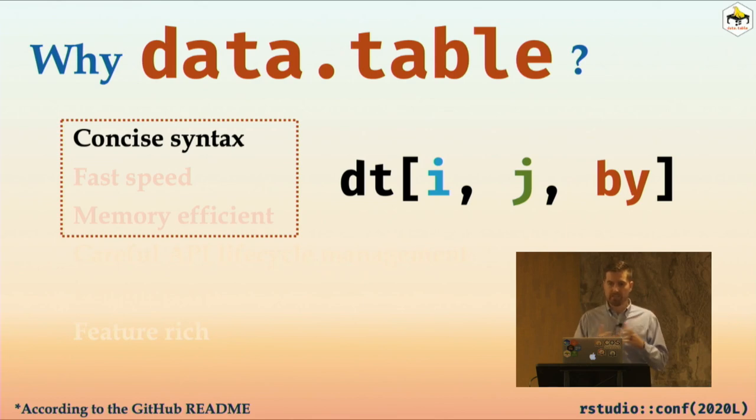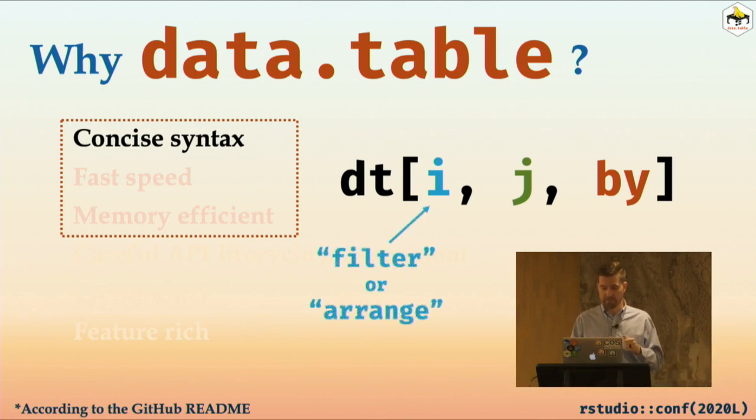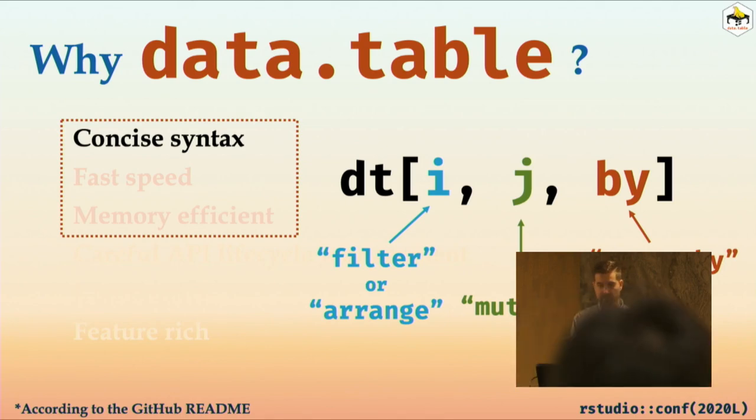You start with your data.table, so we'll call it DT for short, and in the square brackets, you have three main parts. There's other parts that you can use, but there's three main ones. There's i, j, and by. So to translate that, after talking about translating, into dplyr verbs, i, you can think of that as either a filter or a range. So the things that you would normally put in those two, you would put in i. In j, you can think mutate. So when you see code in that place, think mutate. What would I put in mutate? And then by is like group by.